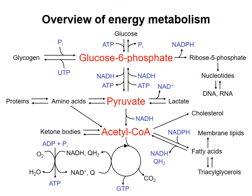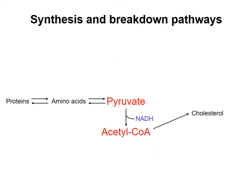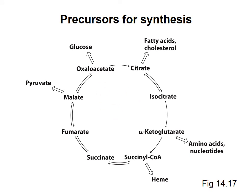I want to talk briefly about the role of pyruvate and the citric acid cycle intermediates in biosynthesis. These biosynthetic processes are represented on the master diagram, but keep in mind that this depiction is highly simplified. The point I want to make is that some intermediates in glycolysis and the citric acid cycle are used to synthesize amino acids and other essential molecules. Some examples are shown on this figure. I just want you to recognize that some intermediates in the citric acid cycle may be used for biosynthesis of important molecules, such as amino acids, nitrogenous bases, and heme.